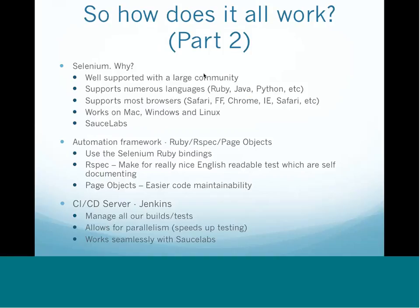So why did we choose Selenium? The reason I decided to go the Selenium route was: first, it's very well supported with a large community. Selenium is eventually going to be the W3C standard for web automation, so it just makes sense to use it. It supports a large number of languages — Ruby, Java, Python, et cetera. It supports pretty much all major browsers: Safari, Firefox, Chrome, IE, and I believe Edge now. It works cross-operating systems — Mac, Windows, Linux. And of course SauceLabs, because one of the things we didn't want to do was build our own in-house Selenium grid to support all these different browser-OS combinations.